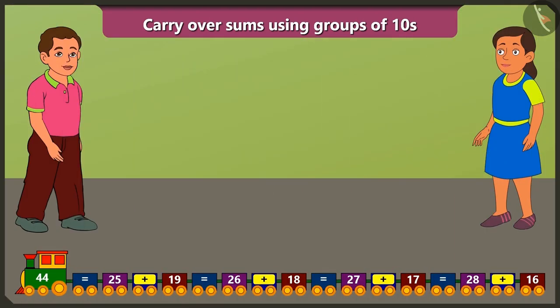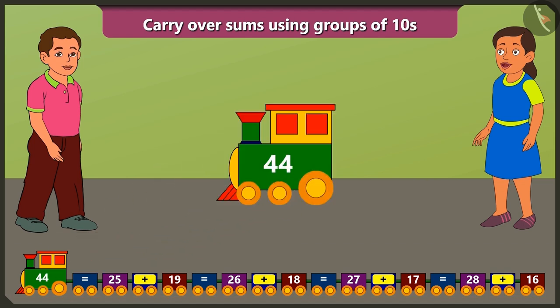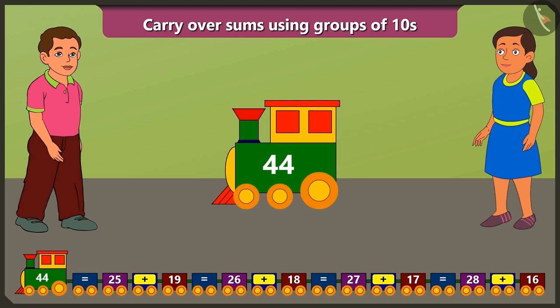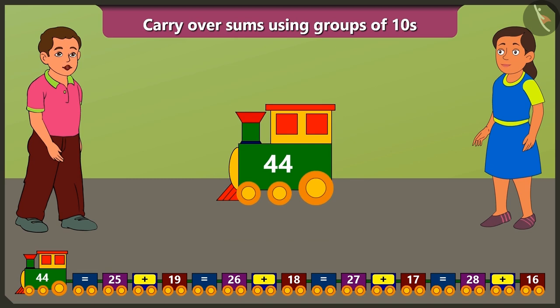Look, Bubbly. What a fun train I have. Hey, but why is 44 written on the engine of your train? Because the sum of all the numbers written on the compartments of the train equals 44. How? Let me explain.